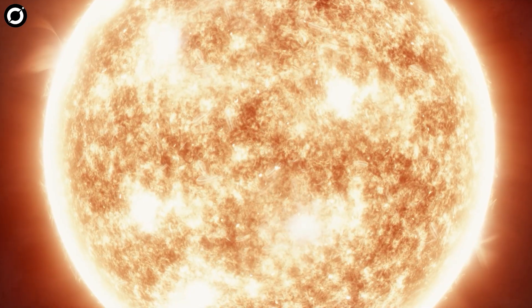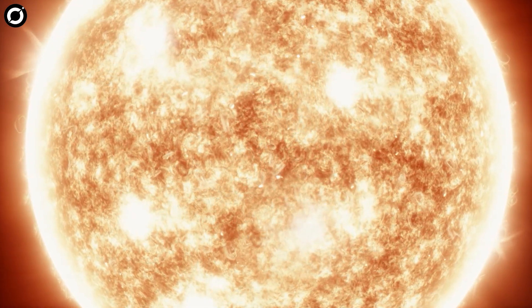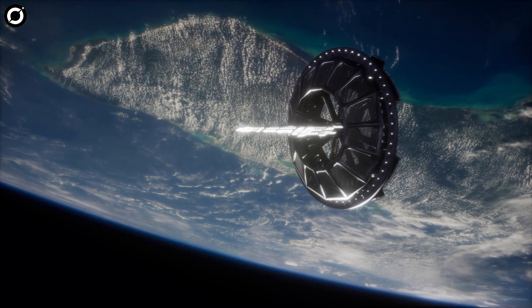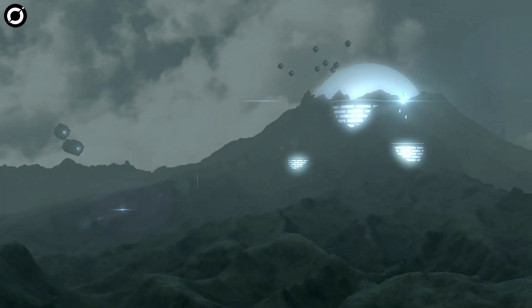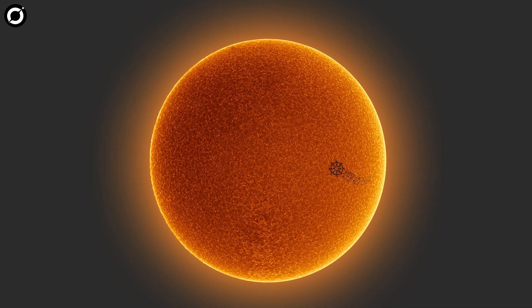When something is being monitored so scrutinizingly, it's almost impossible to miss something unusual. But what if that unusual thing is something that would cause chaos if news of it breaks out? What happens then? While this might sound like science fiction, in today's video we are going to show you some bizarre things spotted near the sun.